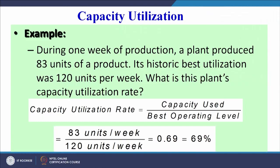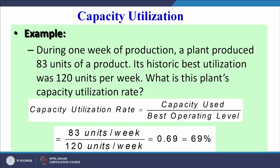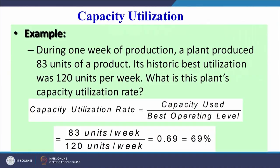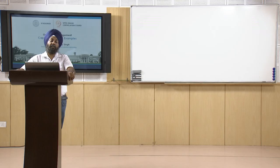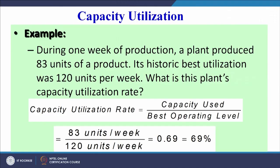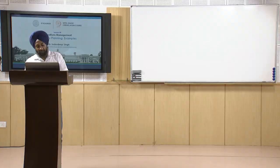Now let us see one example. The capacity utilization rate formula was seen in the last session. The problem: during one week of production a plant produced 83 units; its historic best utilization was 120 units per week. The capacity utilization rate equals capacity used divided by the best operating level: 83 divided by 120 equals 0.69, or approximately seventy percent.